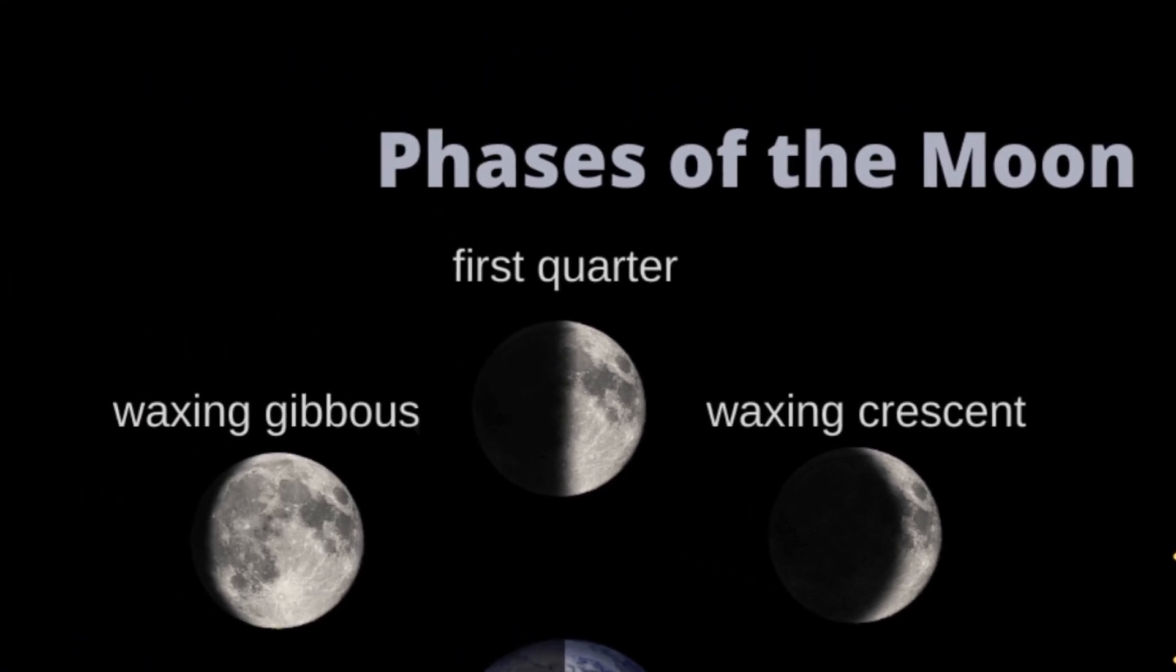First quarter. About a week after the new moon, we see half of the moon illuminated. This is called the first quarter, because the moon is one quarter of the way through its orbit.